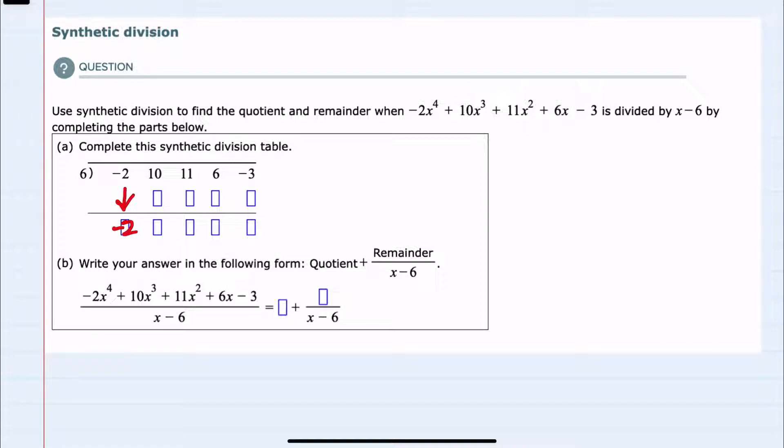Then we multiply the number outside: our 6 times negative 2 would give us a negative 12. After multiplying we add here: 10 plus negative 12 gives us a negative 2. We again multiply 6 times negative 2 is negative 12.